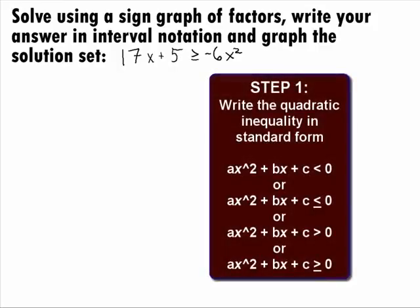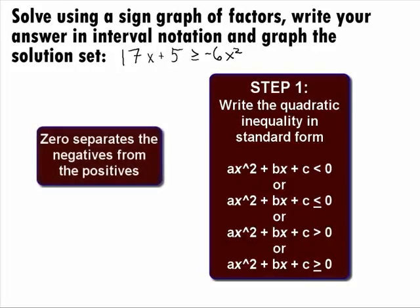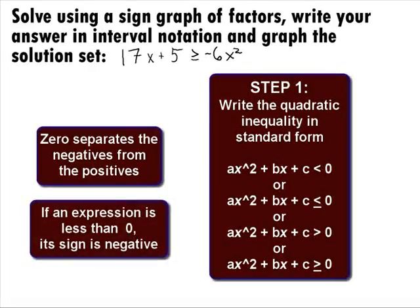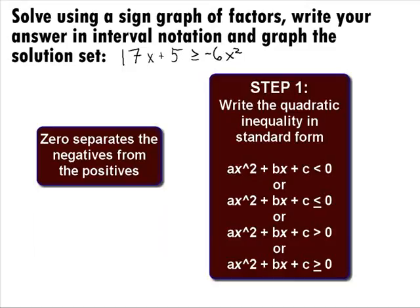In Step 1, we want to write the quadratic inequality in standard form. The standard form for a quadratic inequality is just like the standard form for quadratic equations where we have ax squared plus bx plus c, either less than or greater than 0. The reason we are doing this is 0 is our magic number — it is the only number that separates the negatives from the positives. If an expression is greater than 0, its sign is positive; if it is less than 0, its sign is negative. We cannot say this about any other number. Since we are working with inequalities, this idea will come in handy. With this technique, we will be looking at the sign of a number to determine if it is a solution or not.